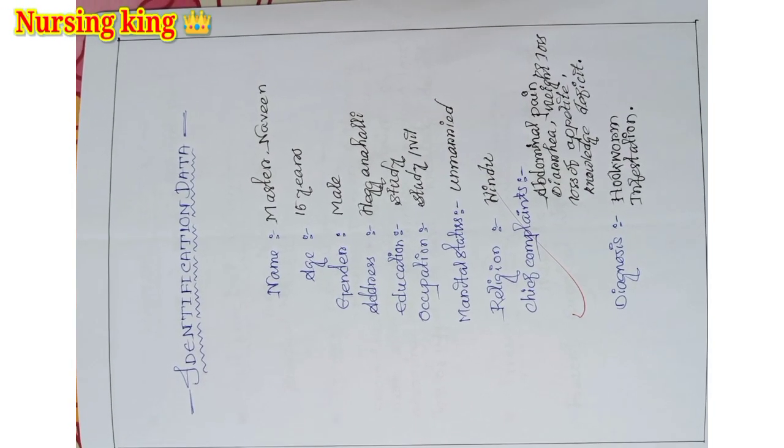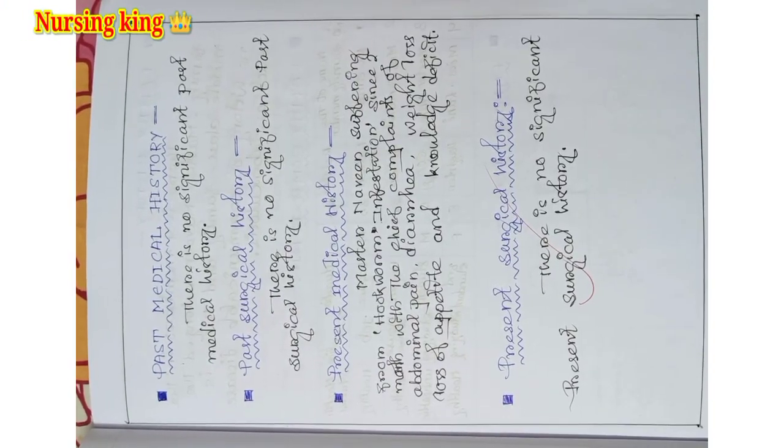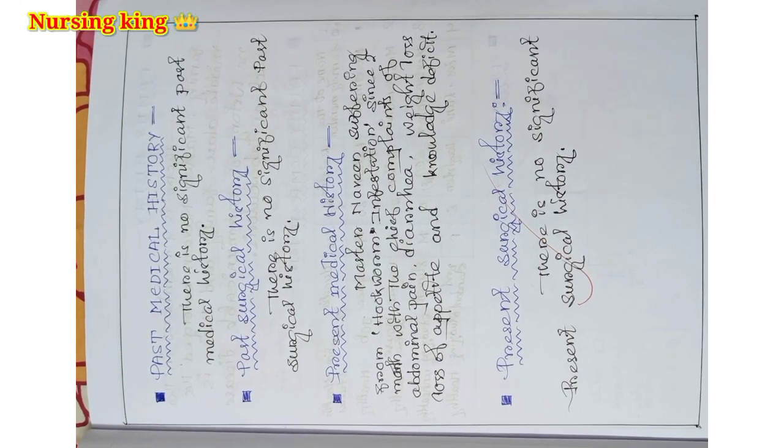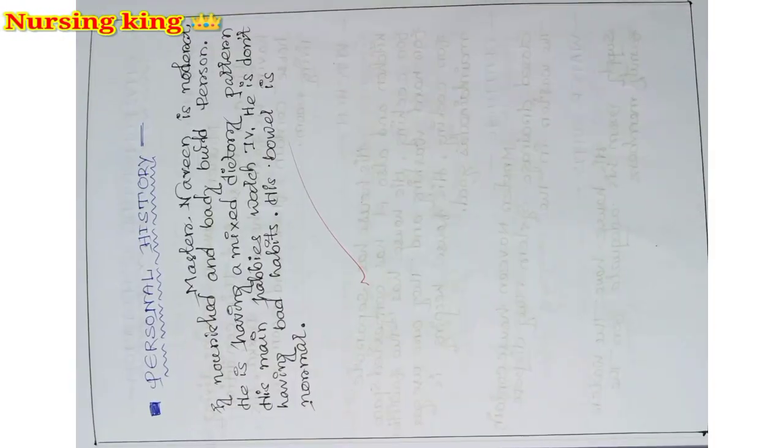Then write the patient's medical history, past surgical and past medical history. Then you have to write the family history, family composition and family tree. After that, you have to write the personal history also.